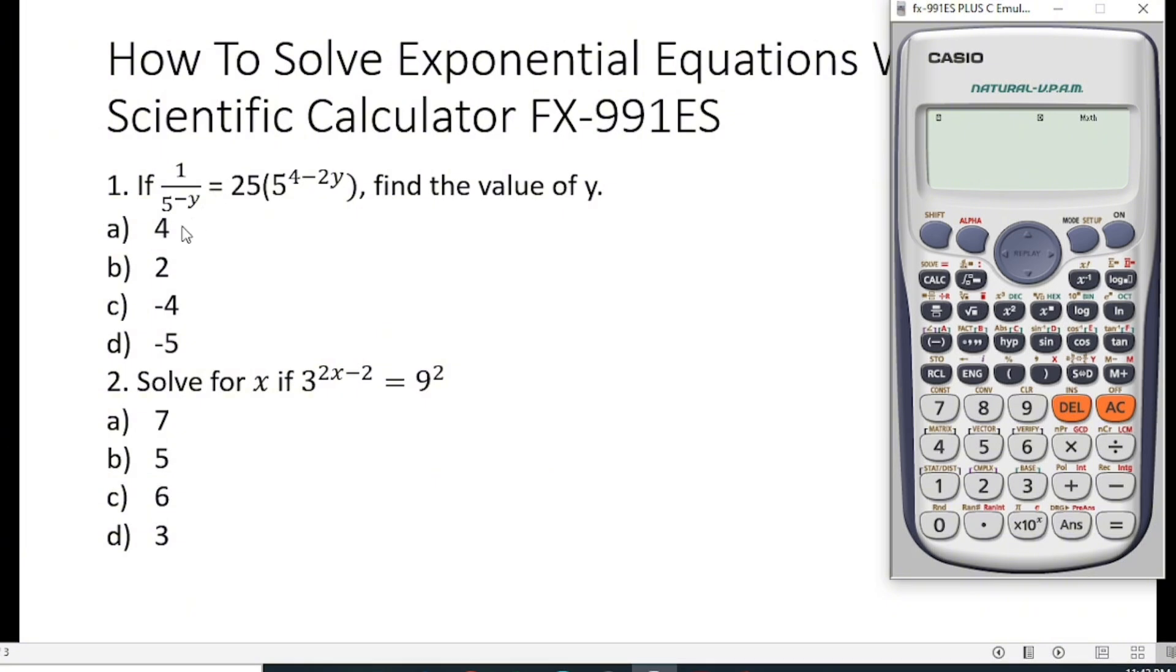If 1/y raised to the power negative y is equal to 25 times 5 raised to the power (4 minus 2y), find the value of y.